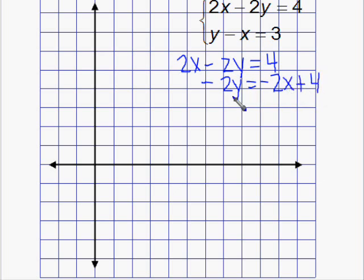We would then want to divide all of our terms by negative 2, and our equation becomes y equals x plus negative 2, or y equals x minus 2.